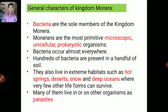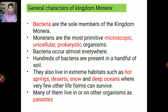The bacteria are the sole member of Kingdom Monera. The Monerans are the most primitive, microscopic, unicellular, prokaryotic organisms. They are very small and cannot be seen by naked eyes, so we use a microscope for observing Monerans. They are all unicellular, made up of only a single cell. They are prokaryotic organisms — the genetic material does not have any nuclear membrane, so the genetic material clearly floats in the cytoplasm.